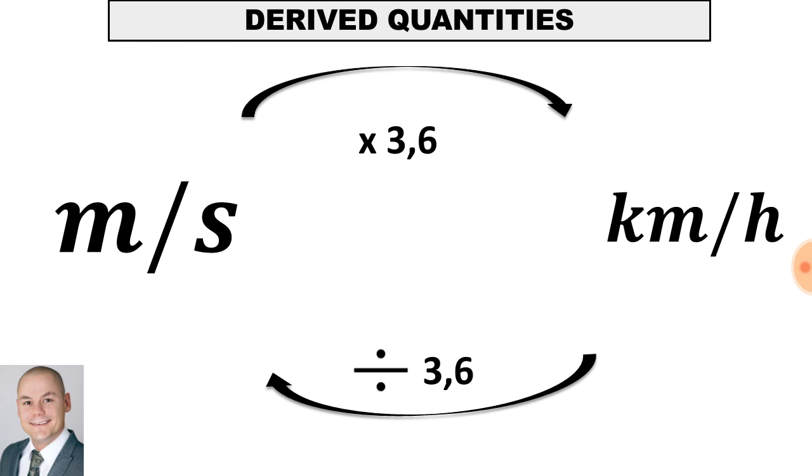To convert meters per second into kilometers per hour, we would multiply by 3.6. And to convert kilometers per hour into meters per second, we would divide by 3.6.